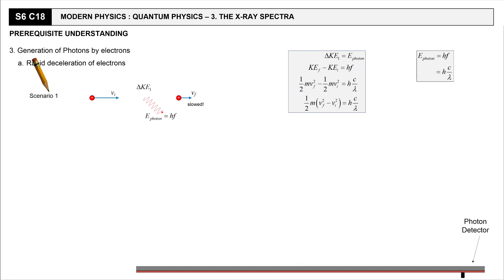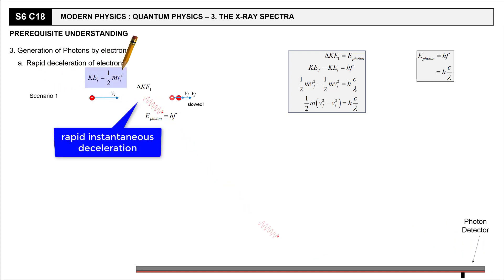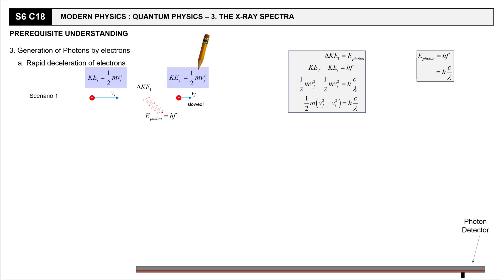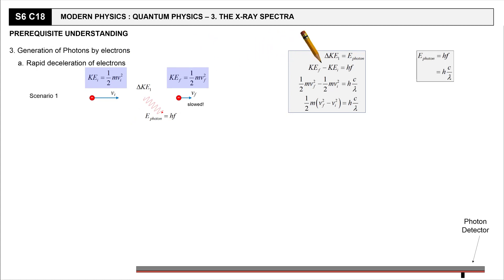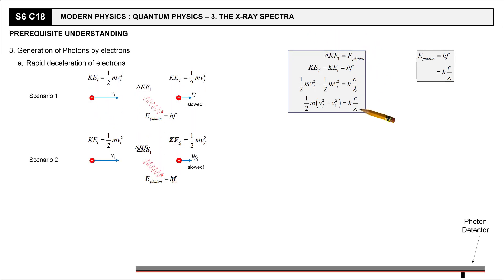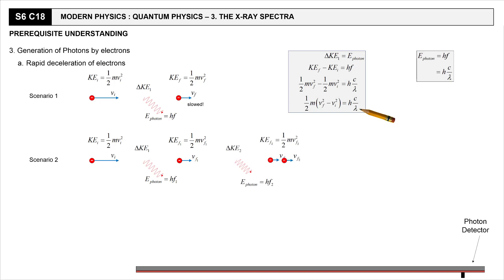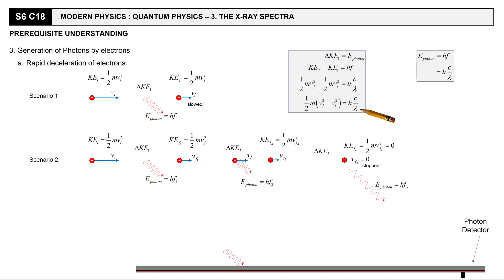Let's look at three possible scenarios. One: suppose an electron with an initial kinetic energy got slowed down at a single instance of slowing down or braking to a final kinetic energy. The difference, being negative — implying a loss — gets converted to a single photon of a particular frequency, thus a particular wavelength. Scenario two: it is also possible that the same electron may undergo subsequent instances of deceleration and thus produce photons of different frequencies, hence wavelengths, before eventually moving on with its final velocity or coming to a stop. Therefore, it is possible to get multiple photons of different frequencies from a single electron undergoing a sequence of rapid instantaneous decelerations — a photon for each instance of slowing down.